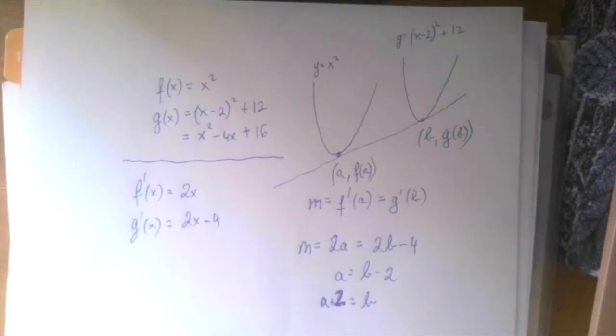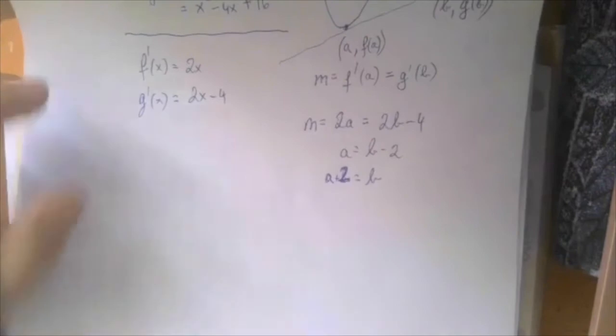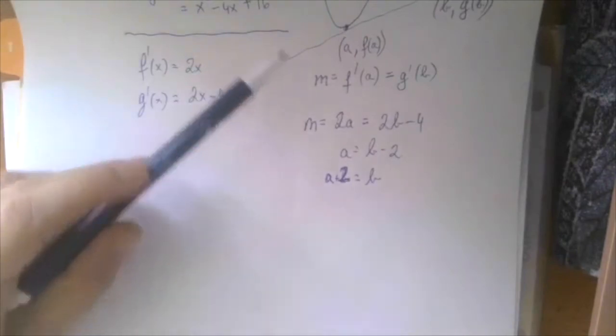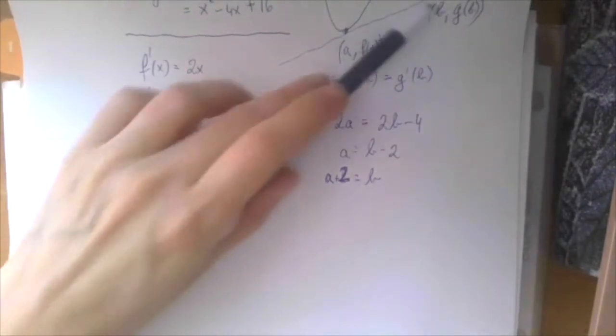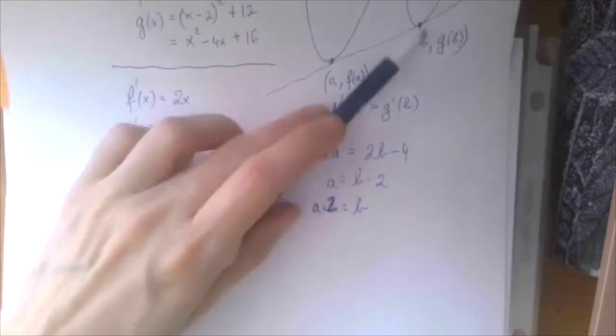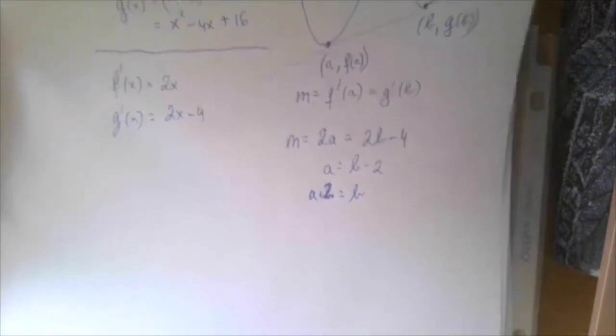Basically, the two points of tangency, the x coordinates are two units apart. But we don't have the solution yet. What we're going to need to do is to find a third way to express the slope, and that is by using these two points. So if we apply the slope formula for these two points, that should be the same slope.